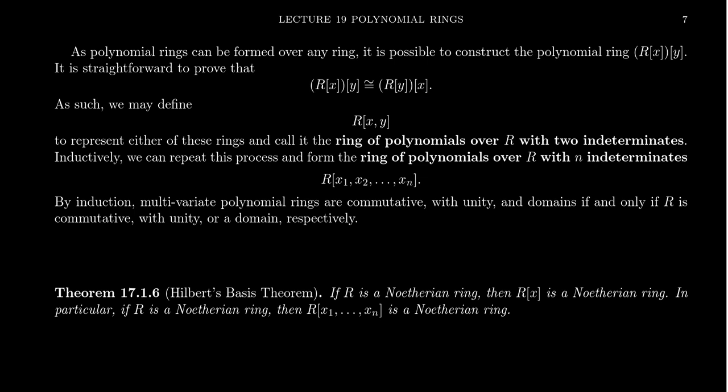And since they're isomorphic to each other, it doesn't really matter which representation you use. And as such, we define the polynomial ring with two variables, R adjoined X and Y, to be the ring that represents these two isomorphic rings. Pick whichever one you want. It doesn't matter.